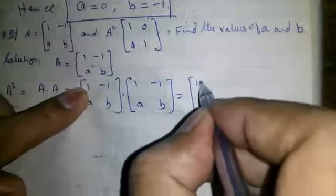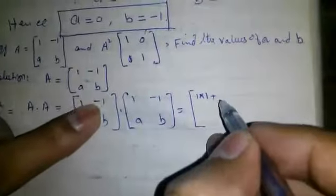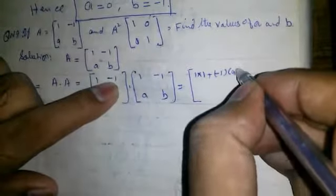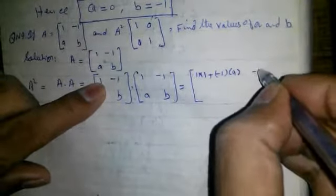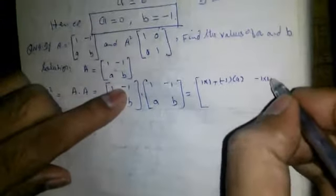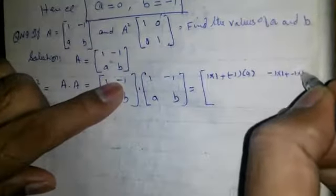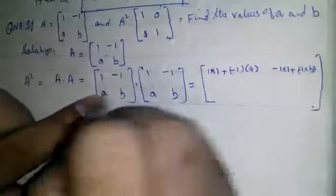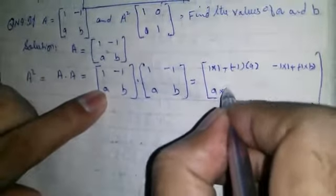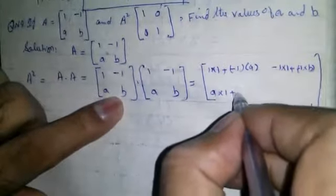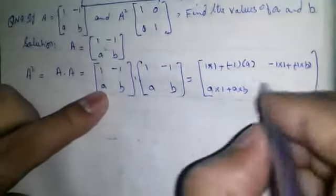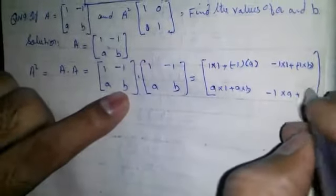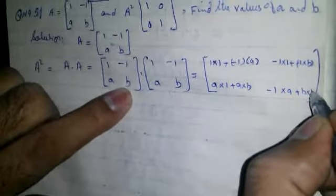Which is equal to: 1 into 1 plus minus 1 into a, then minus 1 into 1 plus minus 1 into b. Now, a into 1 plus a into b, and a into minus 1 plus b into b.